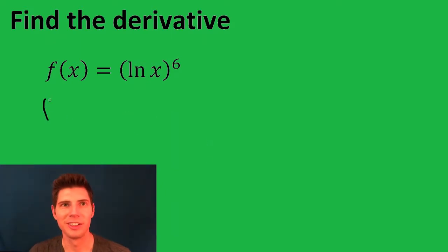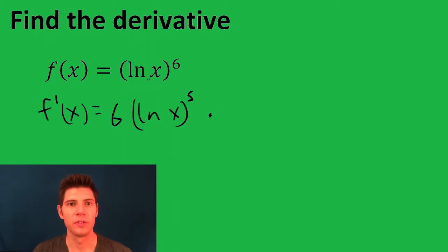So this is going to be chain rule again. We're going to say f prime of x equals, and then the six is brought in front, ln x is left alone to the fifth times, and then we're going to take the derivative of what's inside.